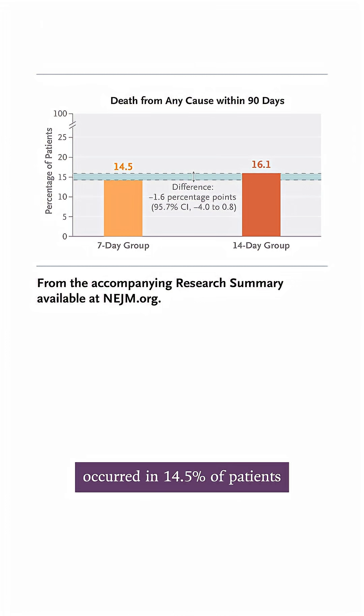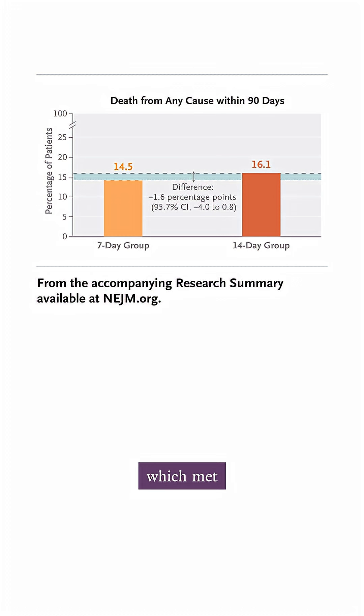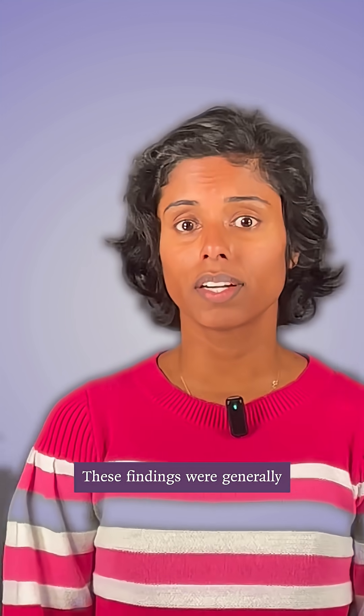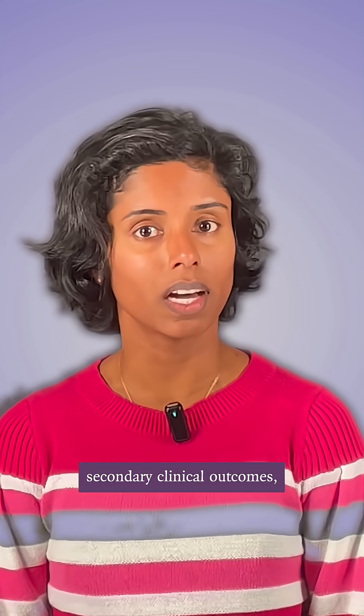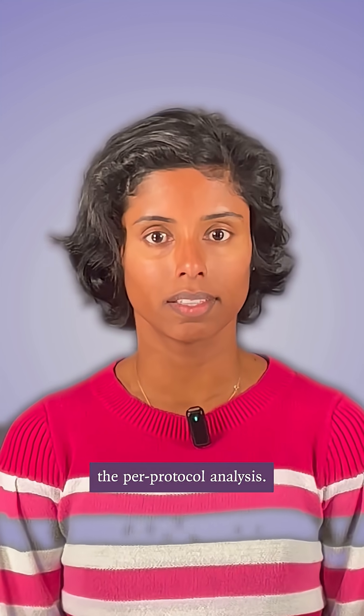The primary outcome of death in 90 days occurred in 14.5% of patients receiving 7 days, and 16.1% of patients receiving 14 days of antibiotics, which met the non-inferiority criteria. These findings were generally consistent across secondary clinical outcomes, subgroup analyses, and a per-protocol analysis.